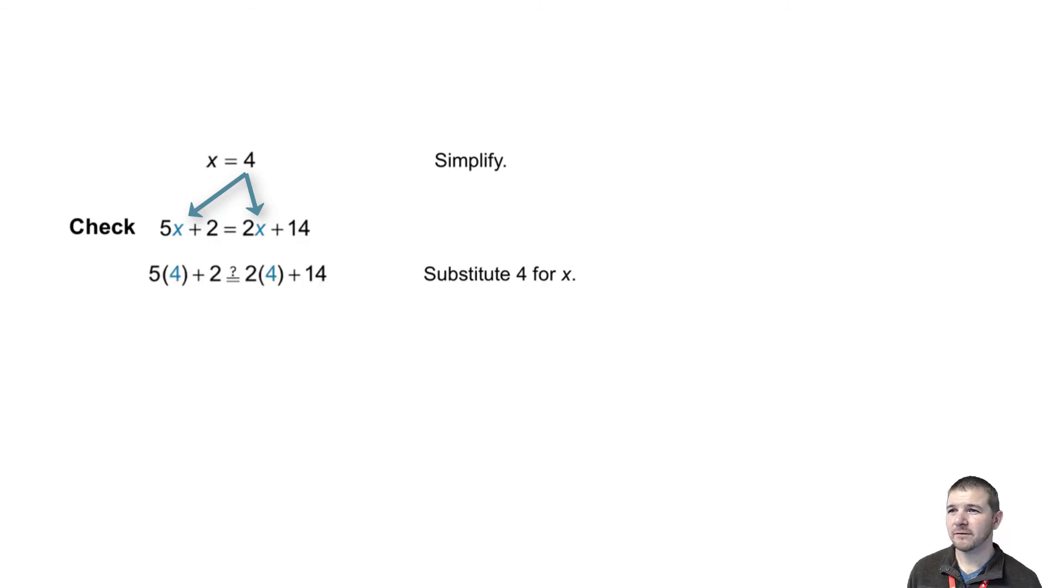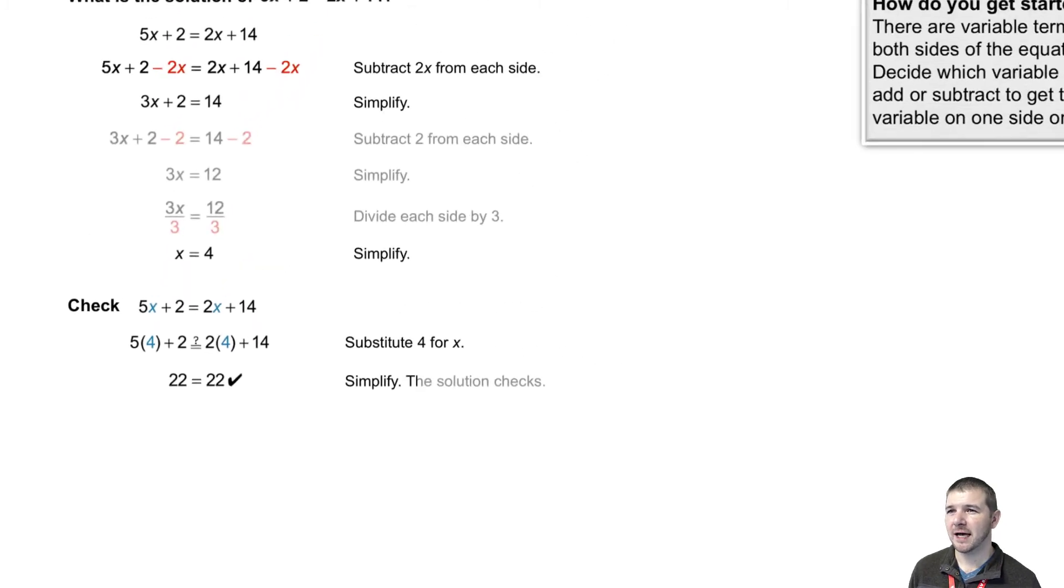So when we substitute 4 for x, is it true that 5 times 4 plus 2 equals 2 times 4 plus 14? Simplifying on each side, 22 equals 22, so our solution checks out.